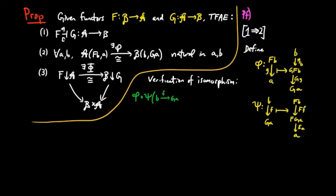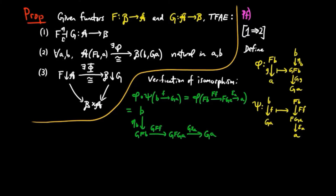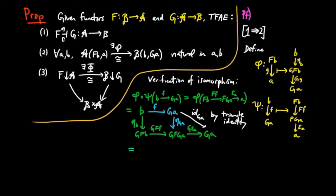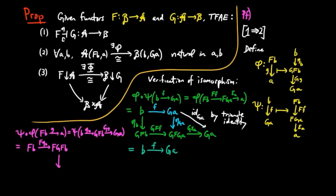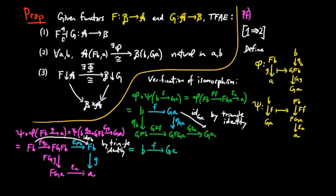We have phi(psi(F)) equaling eta_B followed by G(F(F)) followed by G(epsilon_A). We can make a substitution of F followed by eta_GA for eta_B followed by G(F(F)) by naturality of eta. But eta_GA followed by G(epsilon_A) is the identity on GA by the triangle identity, so we get back F. Looking at psi(phi(G)), this gives us F_{A→B} followed by F(G(G)) followed by epsilon_A, and F_{A→B} followed by epsilon_FB being the identity by the triangle identity, so we get back G. Therefore, phi is an isomorphism of sets.